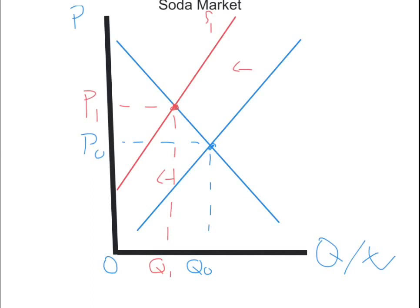The solution is to raise the price so they can find a new equilibrium, where they can sell a fewer amount but still get what they need.